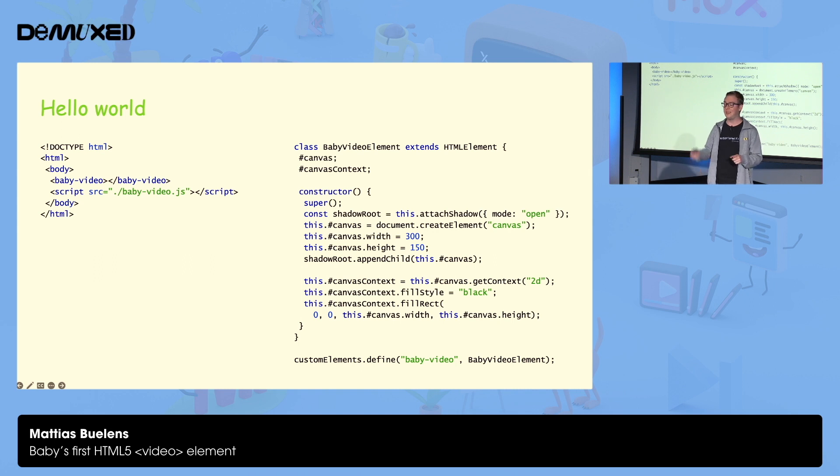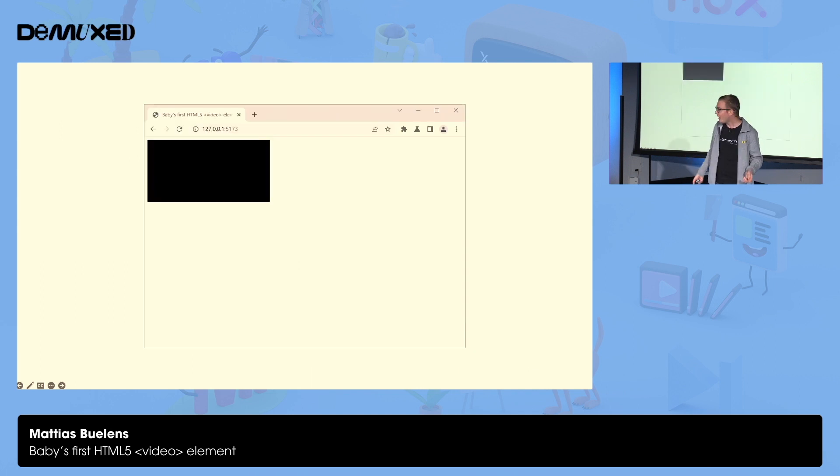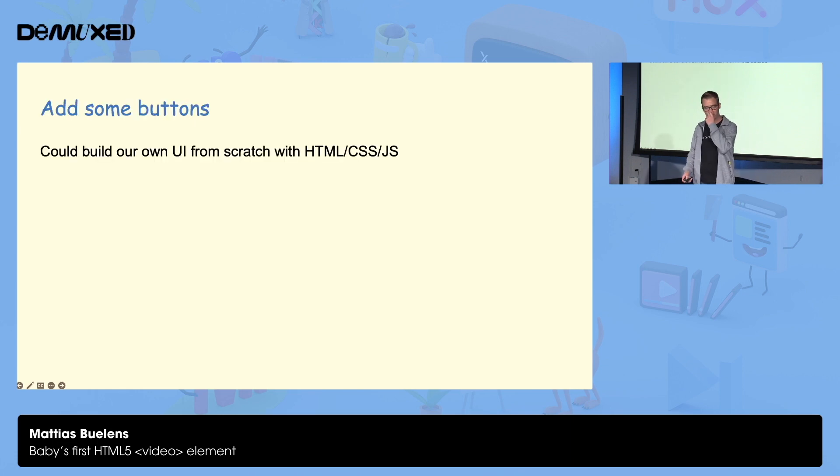First things first, let's put the elements in video element. We've got custom elements for that today. So we can just define our baby video element in JavaScript, put it on our page, put a canvas element in there so that we have somewhere to draw our video frames on. And that should work. There we go. We've got a black rectangle. Not too excited just yet. Very convoluted way to get a black rectangle on your screen. So let's put something extra in there.